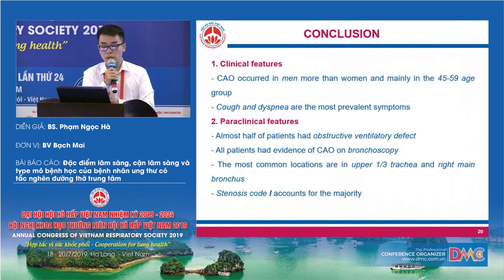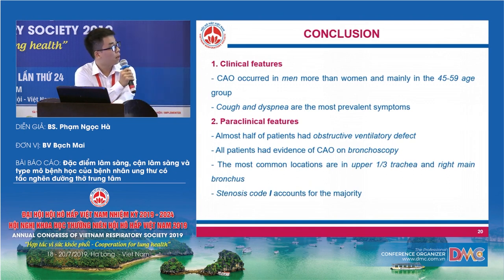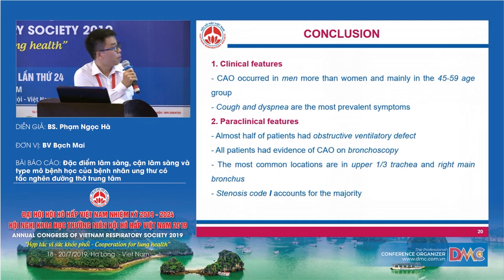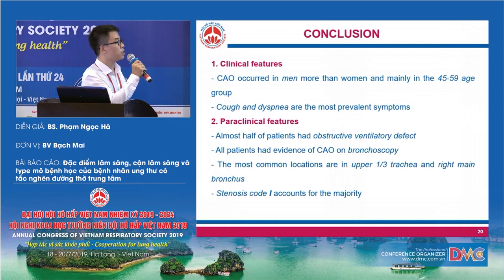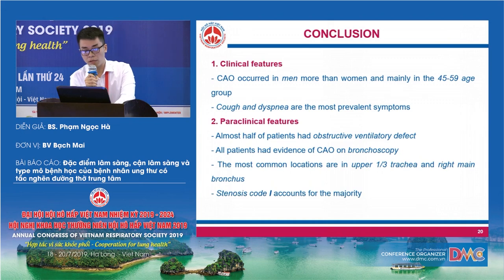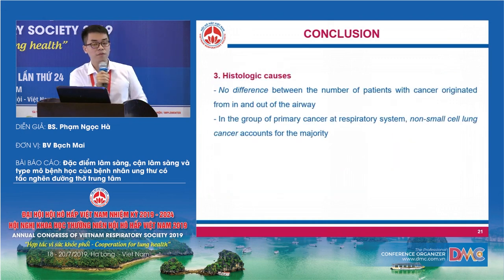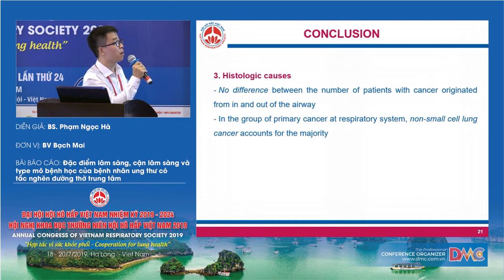Based on our results, our research has the following conclusions. First, regarding clinical features: CAO occurs more in men than women, mainly in the 45 to 59 age group; cough and dyspnea are the most prevalent symptoms. Second, regarding paraclinical features: almost half of patients have obstructive ventilatory defect; all patients have evidence on bronchoscopy; the most common locations are the upper third of the trachea and right main bronchus; stenosis code 1 accounts for the majority. Regarding histologic causes, there is no significant difference between patients with cancer originating from inside or outside the airway, and in the group of primary respiratory system cancer, non-small cell lung cancer accounts for the majority. Thank you for your attention.